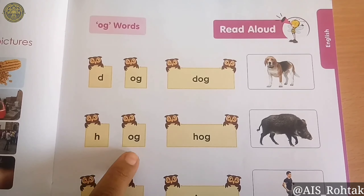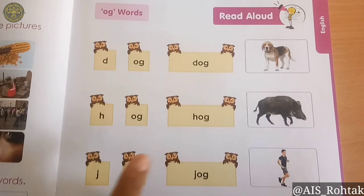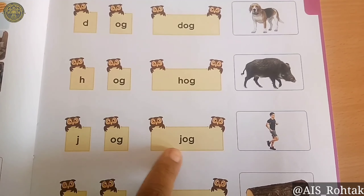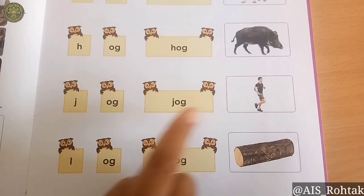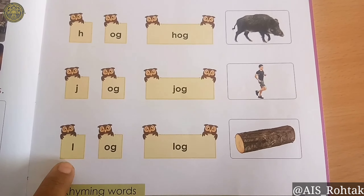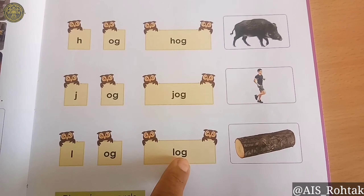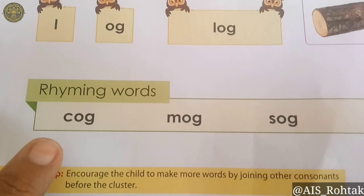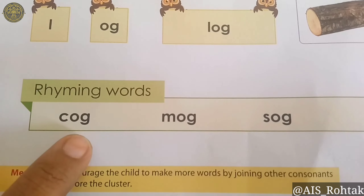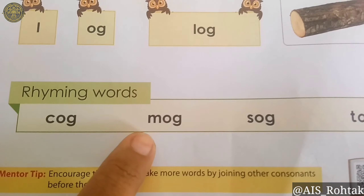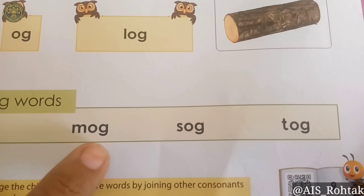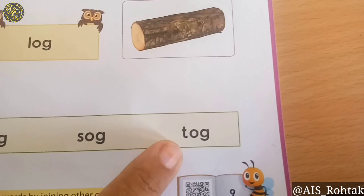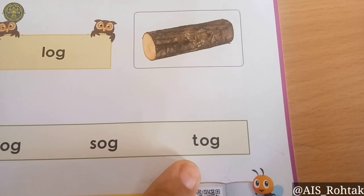Og. Hog. J, og, Jog. L, og, Log. Og rhyming words. K, og, Cog. M, og, Mog. S, og, Sog. T, og, Tog.